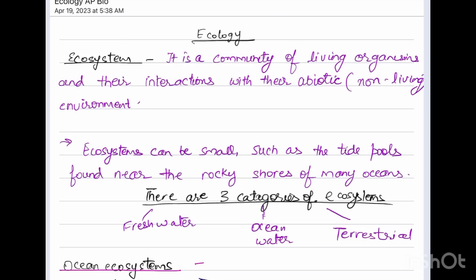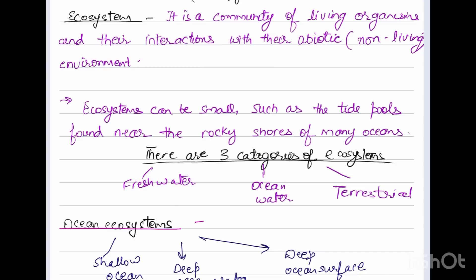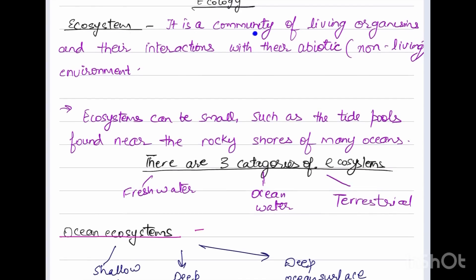Hello and welcome to my channel. Today we are going to discuss ecology from the point of view of AP. Let's discuss ecosystem first. It is a community of living organisms and their interactions with their abiotic partners, so biotic as well as abiotic components together make an ecosystem.